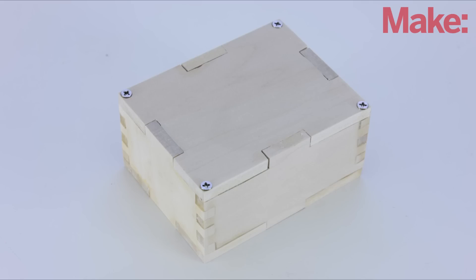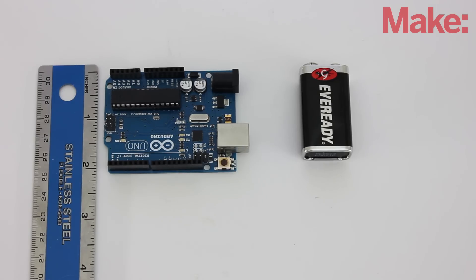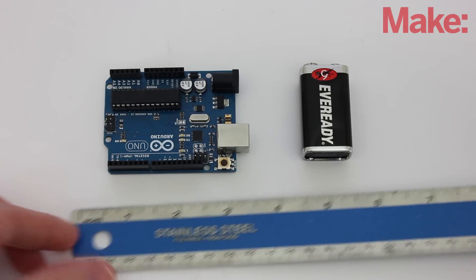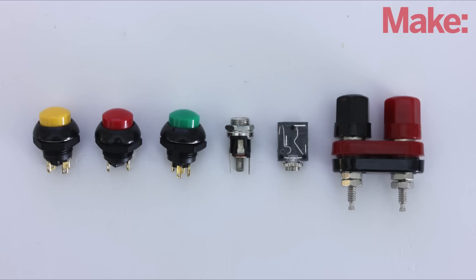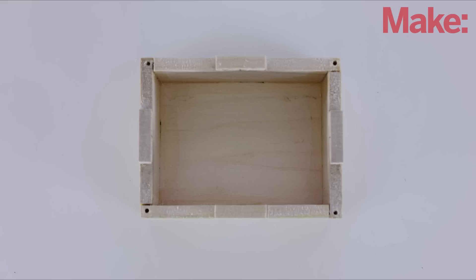The first thing to figure out is how big the project enclosure should be. Start by measuring all the components that will go inside, then add a little more space for wires and connectors. Be sure to leave enough room to attach any components that will mount to the outside of the housing. This will give you an idea of how big to make the inside of the box.